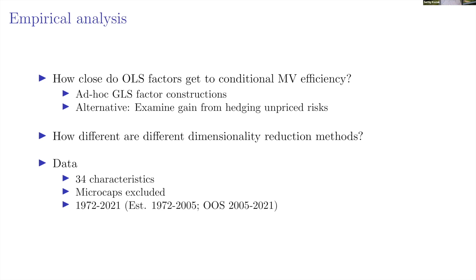For the hedging approach: if you hedge heuristic factors several times and see large statistical improvements in the maximum squared Sharpe ratio, it means the original factors were not efficient. That serves as our benchmark for how efficient the original factors were. We use 34 characteristics, no microstocks, and examine average squared Sharpe ratio improvement in percent relative to the baseline model using original factors.